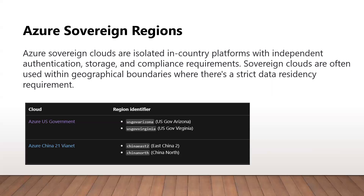The second sovereign region is Azure China, which is a physical and logical network-isolated instance of cloud services located in China. In order to apply for an Azure China account, you need a Chinese legal entity, an internet content provider license, and physical presence within China. Azure China is operated by a partner called 21Vianet and not Microsoft directly.